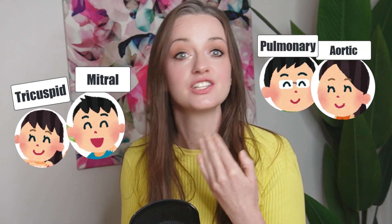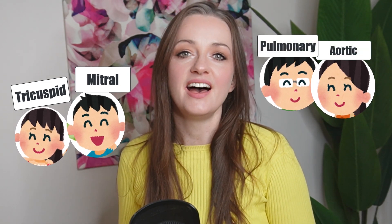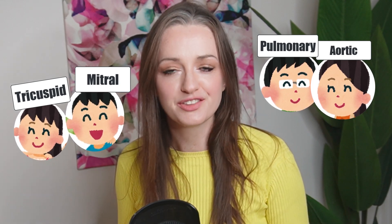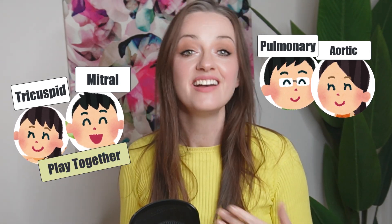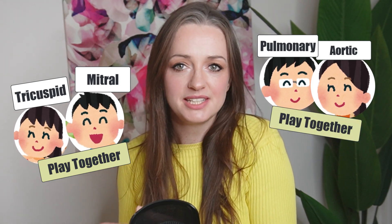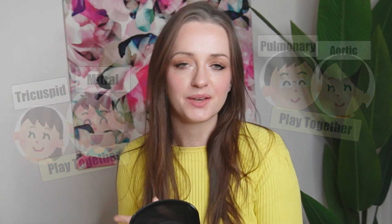The children, Michael and Tricia, are in charge of their doors or valves — mitral and tricuspid — and the adults are in charge of the aortic and pulmonary valves or doors. In this household, on a good day in health, the children are playing together and their parents are also playing together. They're on the same team; they are in sync.